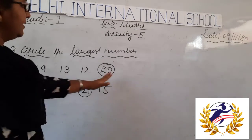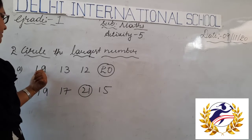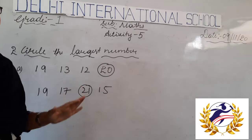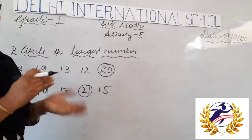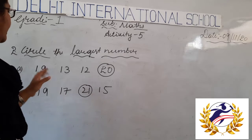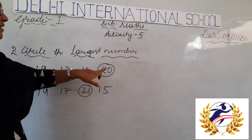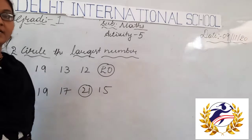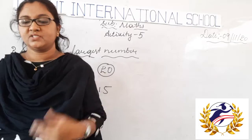While circling the numbers, what we have to do? We have to check out the tens place. The two-digit number is always greater. And if both numbers are two-digit, we have to look at the digit at the tens place. If the digit at the tens place is greater, then that number is greater. Next, we will move to the next one.